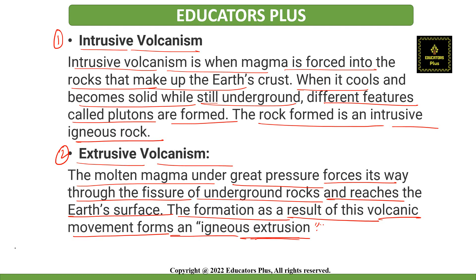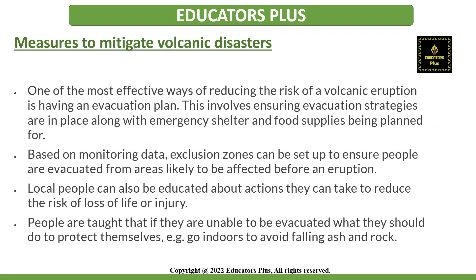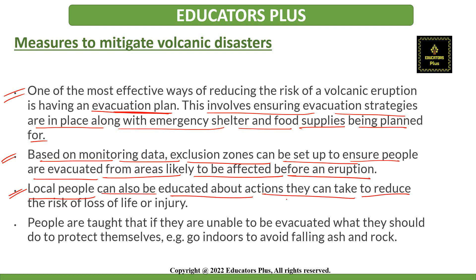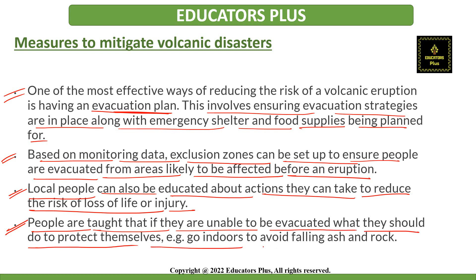Now let's discuss measures to mitigate volcanic disasters. One of the most effective ways of reducing the risk of volcanic eruption is having an evacuation plan — this involves ensuring evacuation strategies are in place along with emergency shelter and food supplies. Based on monitoring data, exclusion zones can be set up to ensure that people are evacuated from areas likely to be affected before an eruption. Local people can also be educated about actions they can take to reduce the risk of loss of life or injury. People are taught that if they are unable to evacuate, they should go indoors to avoid falling ash and rock.